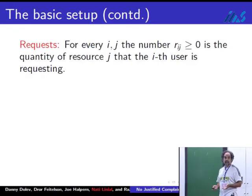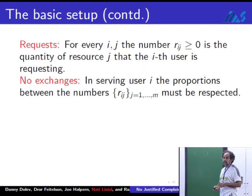The users want to make use of the resources. User i requests r_ij of resource j, and these are non-negative numbers. This is one of the critical aspects of this model: we're in a situation where you cannot exchange. If you're thinking about the computer system application, it's not possible to have more CPU and less bandwidth and still do what you want.